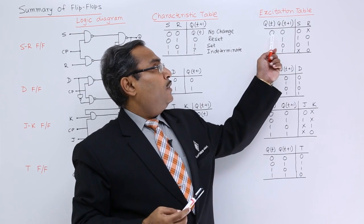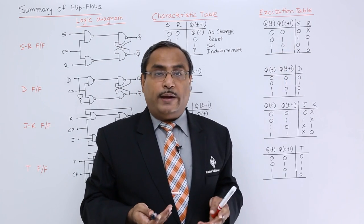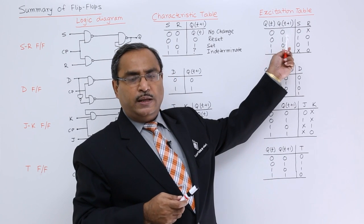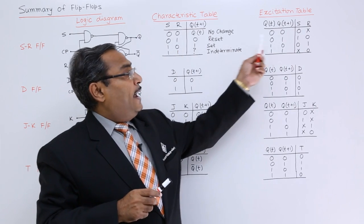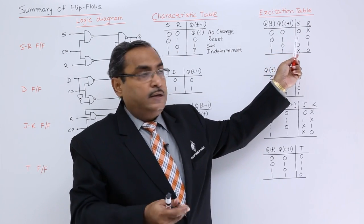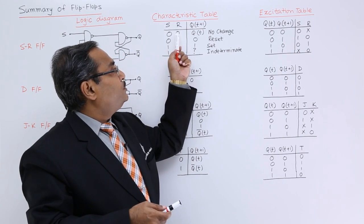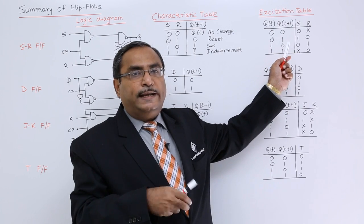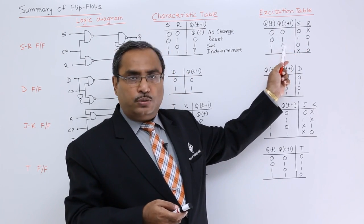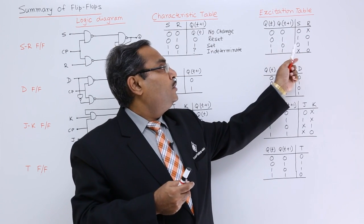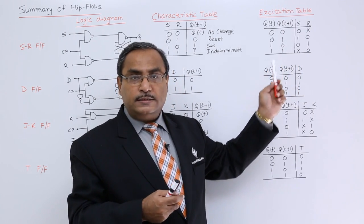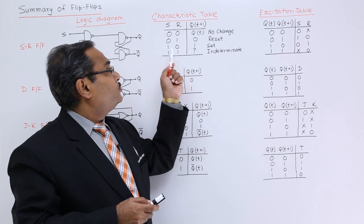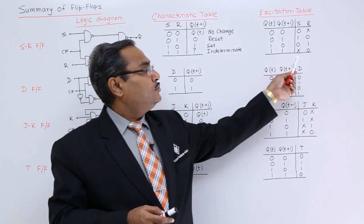Now here we have the respective excitation table. From 0-to-0 transition, we get 0x. Why 0x? Because from 0 to 0, you can think of it in two ways: either there is no change in the output, so input should be 0,0; or the output is getting reset, so input should be 0,1. Merging them gives 0x. From 0-to-1, output is getting set, so input is 1,0. From 1-to-0, output is getting reset, so reset is 1 and set is 0. For 1-to-1: either output is not changing (input 0,0) or output is getting set (input 1,0) — merging gives x0.